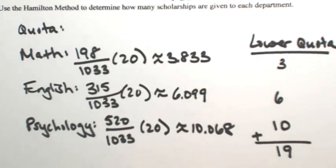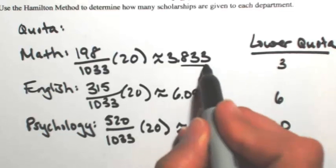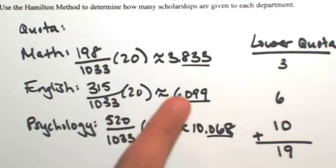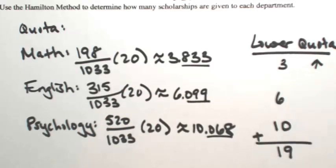Keep in mind that there were 20 total, so one of these is going to get one more. The Hamilton method tells you to assign that to whichever category has the highest amount left over—in other words, the fractional part. If we look at just the number after the decimal, whichever one is higher should get the leftover. So 0.833 is higher than the other two, so math is going to go up by 1.